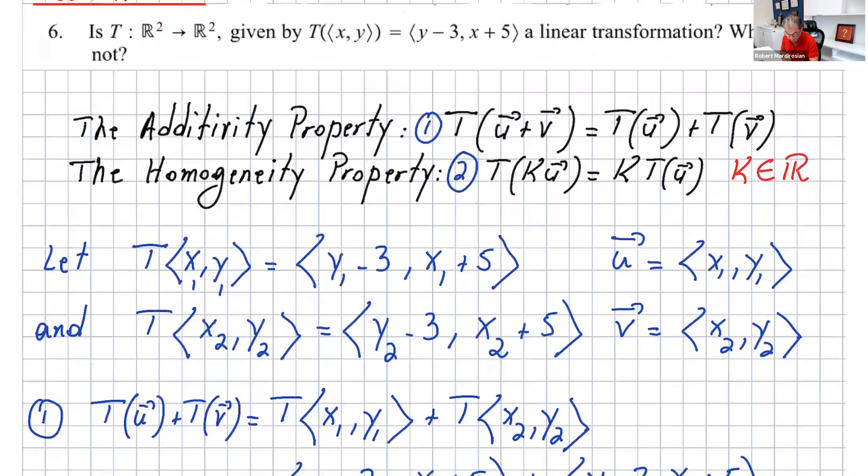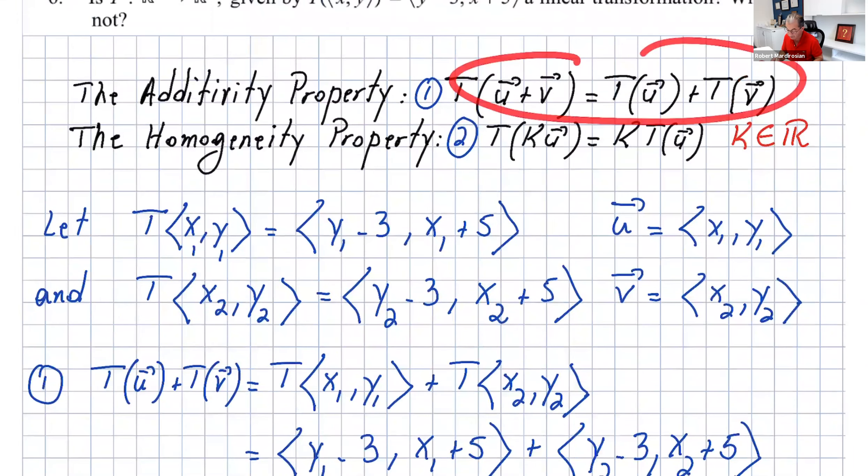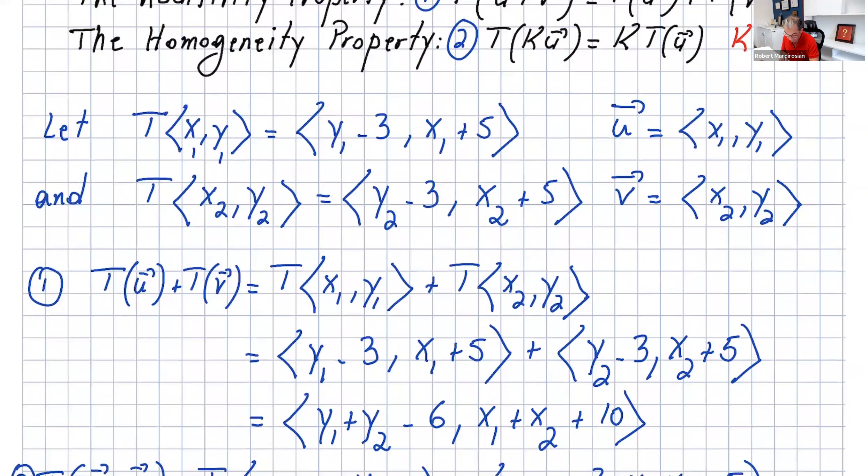Now let's go over number one. I'm going to start from this side: T(u) + T(v). Here we substitute T(x₁, y₁) + T(x₂, y₂). Then of course the transformation from here is ⟨y₁ - 3, x₁ + 5⟩ and that one is ⟨y₂ - 3, x₂ + 5⟩.